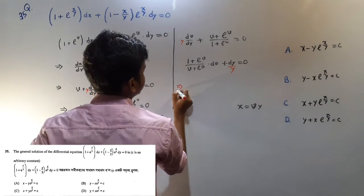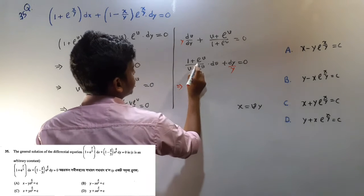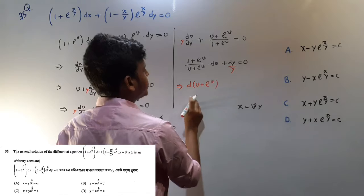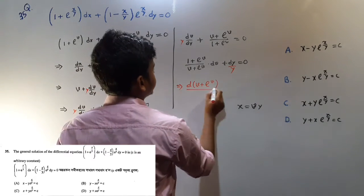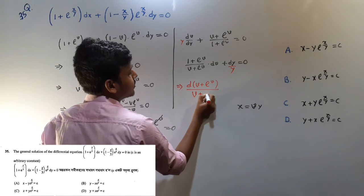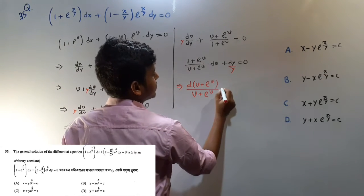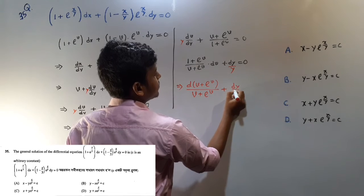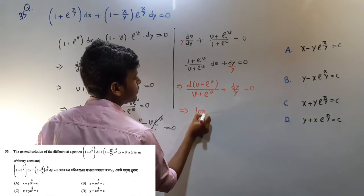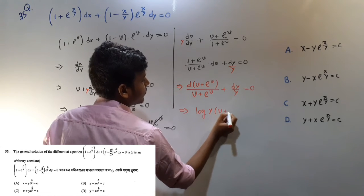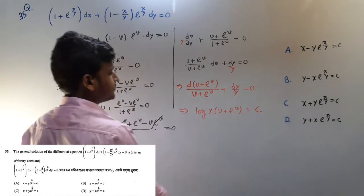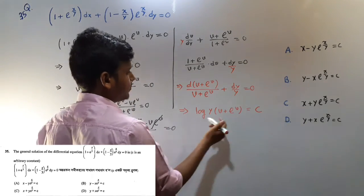Simply integration — doing integration. What happens? We have v plus e to the power v, what does it become? 1 plus e to the power v at the bottom. We take log at the bottom. We have dv — light hoda. dy/y. So what is the integration? Log y plus e to the power b, so c is a constant. Okay, so this is log c.